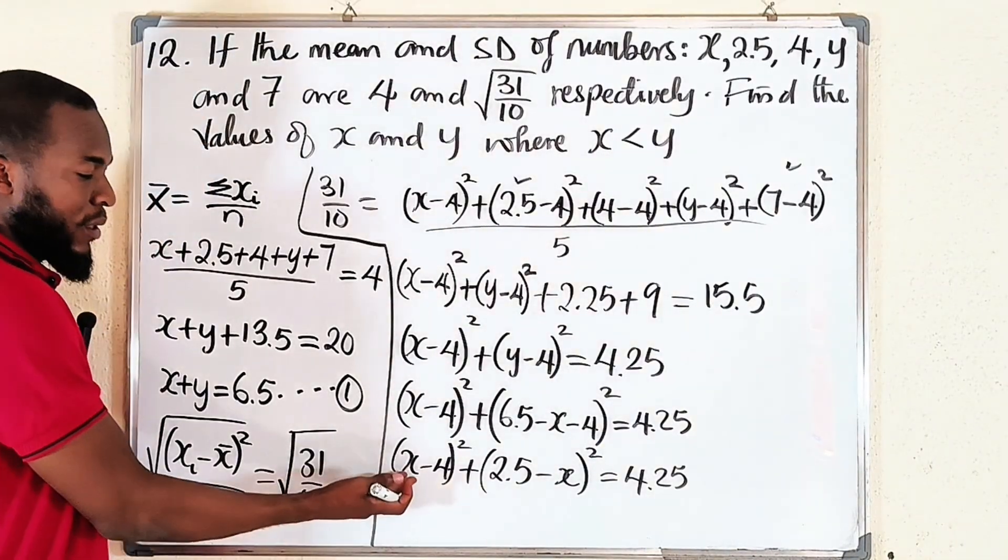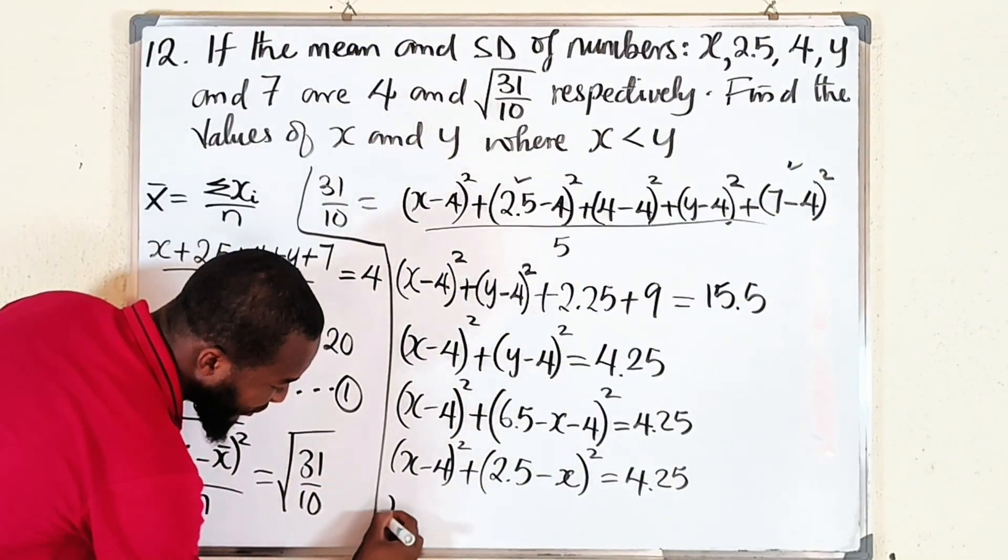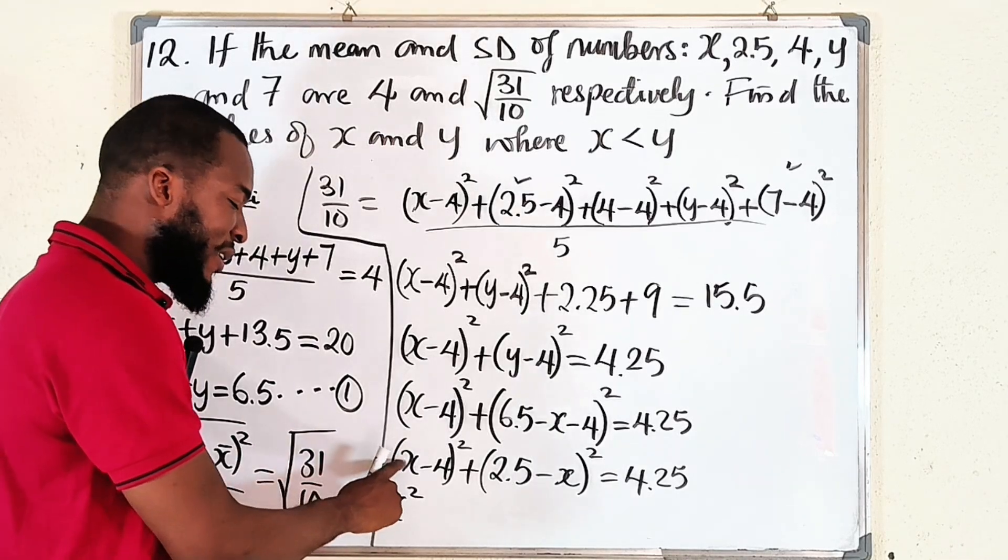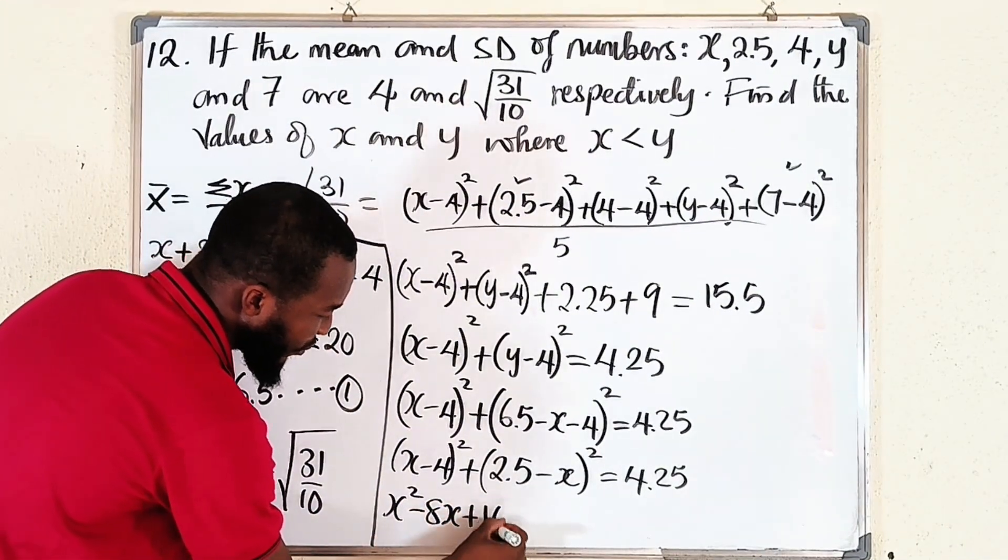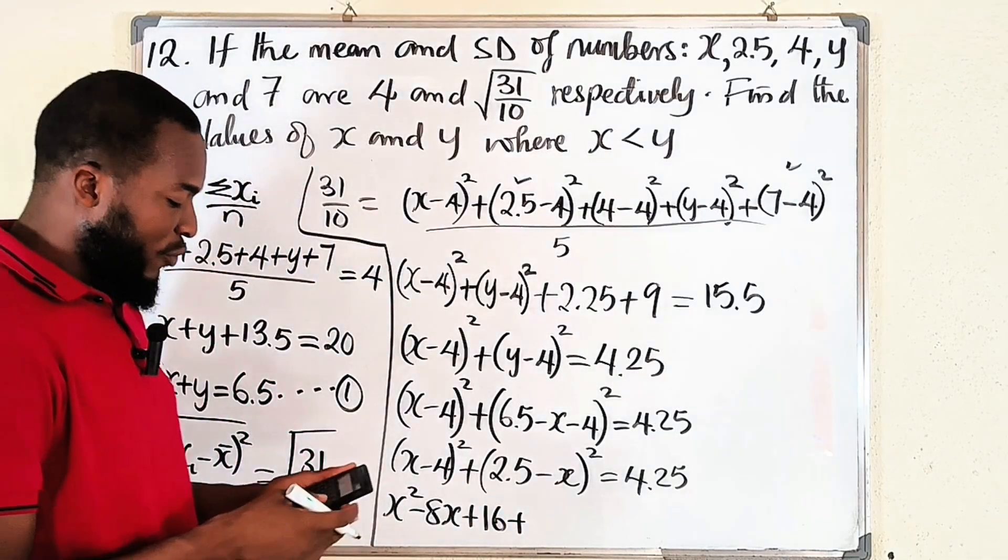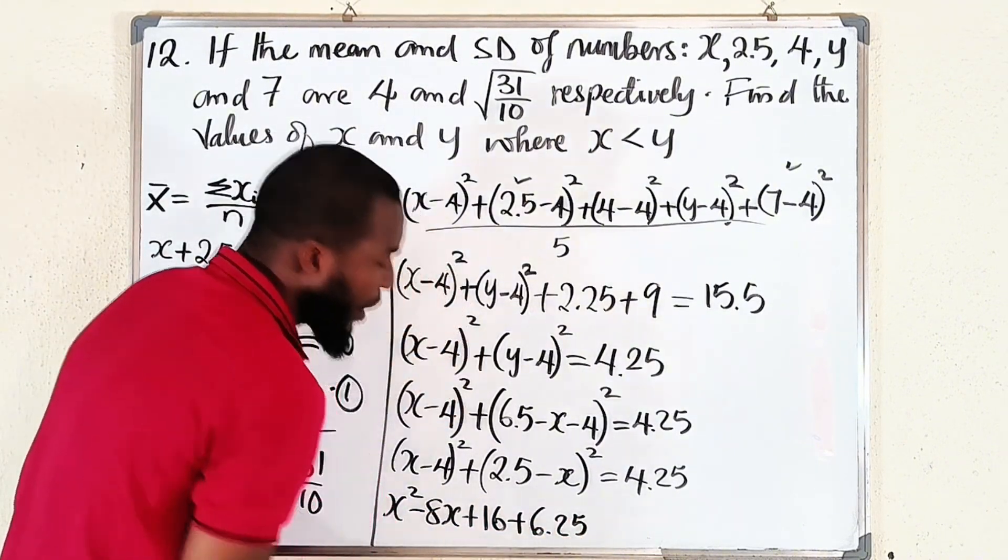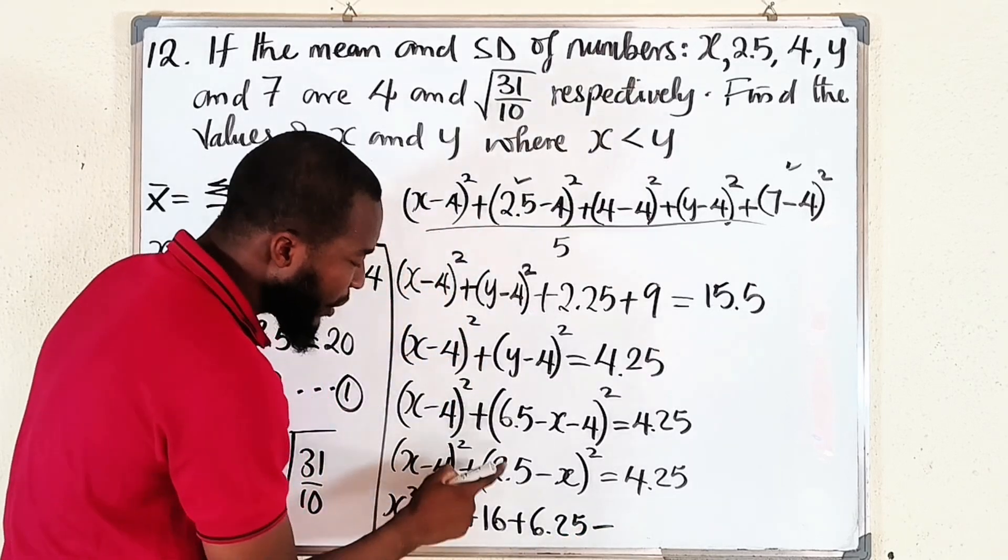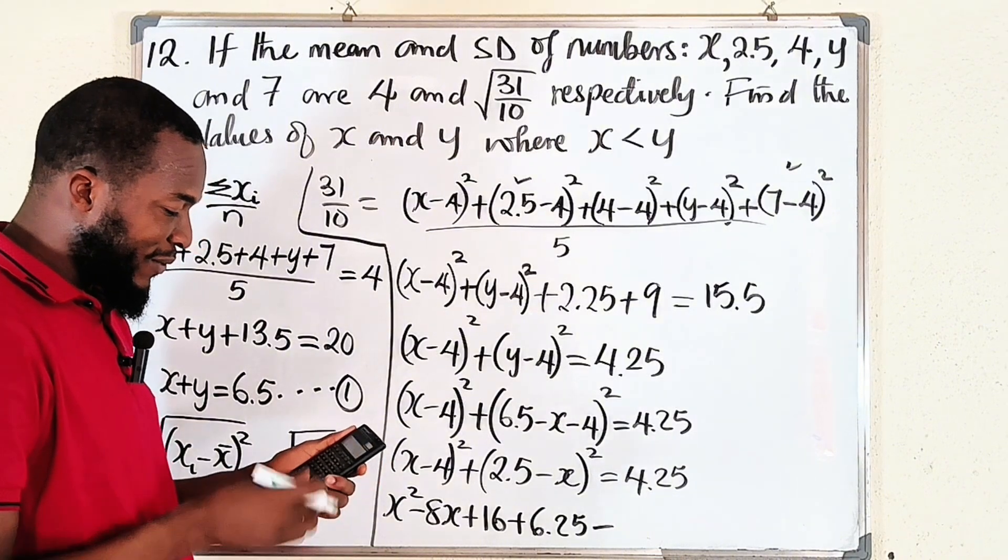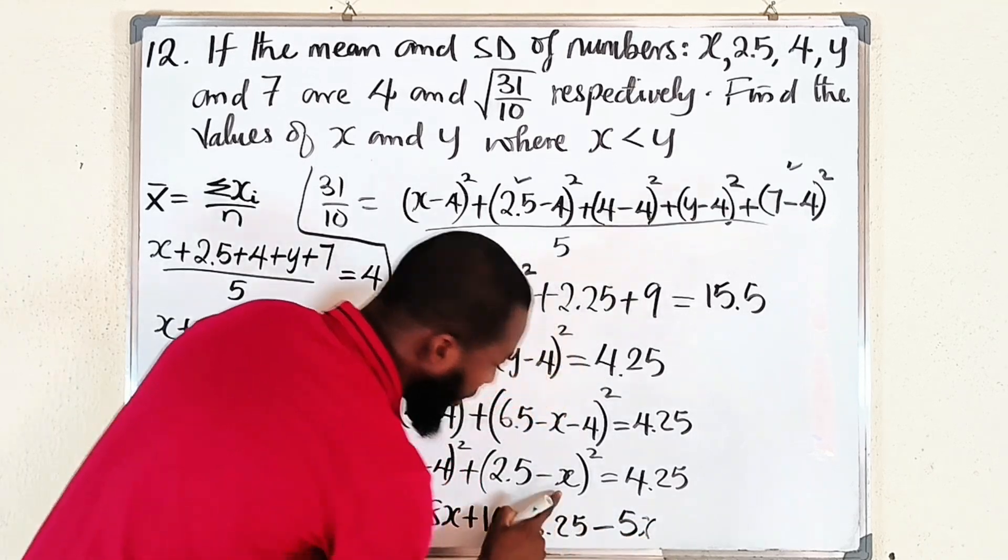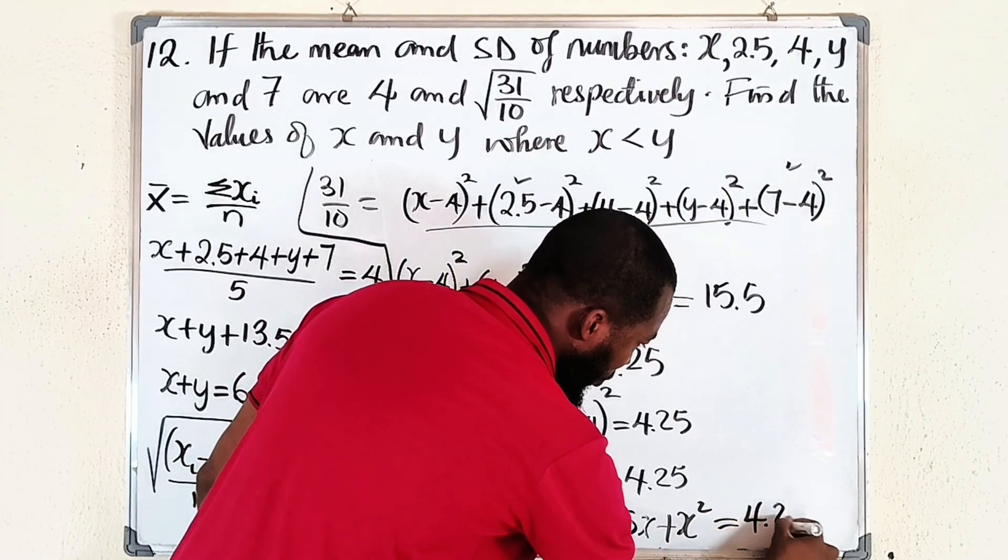Now let us expand. These are binomial terms to the power of 2. If you take the first term here, you square that, that will give you x squared. You take 2 times this times that, this is going to give you negative 8x. Then this squared will give us 16. Plus, 2.5 squared is 6.25, then minus 2 times this times that, 2.5 times 2 is going to give us 5x. Then lastly we have negative x all squared will give us positive x squared, everything equal to 4.25.